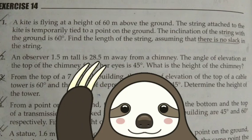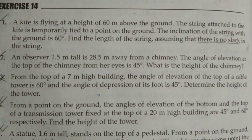Hello everyone, so let's continue with question number two. An observer 1.5 meters tall is 28.5 meters away from a chimney. Now, if they've mentioned the person's height, then you have to draw a rectangular box underneath the triangle.